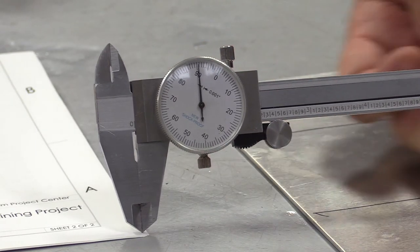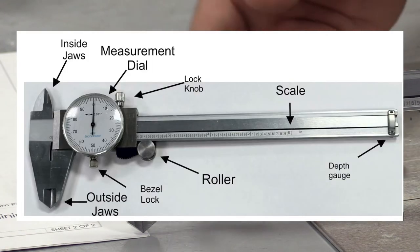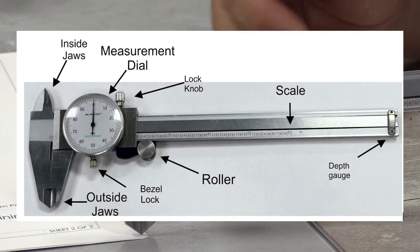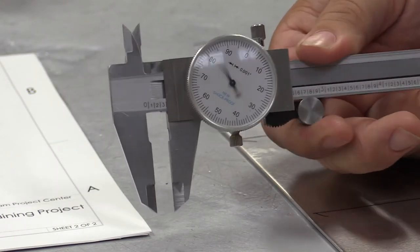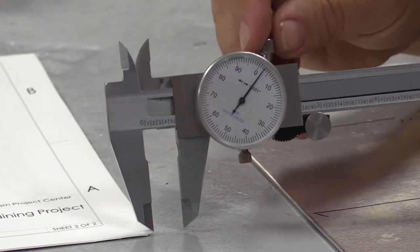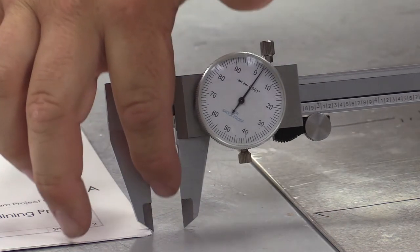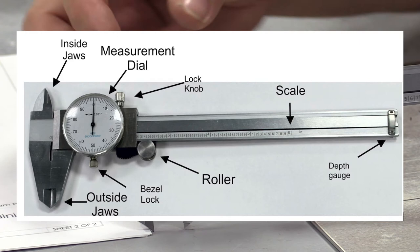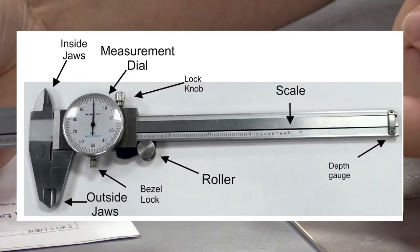The long part here with all these numbers is called the scale. This is the dial. The dial is going to allow us to be accurate to a thousandth of an inch, which is 0.001. The roller here will allow me to open and close the caliper. We have this lock knob here. The lock knob will actually lock the jaws in place. The jaws here are going to be measuring the outer diameter, the inner diameter, and the depth of something.